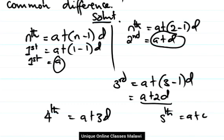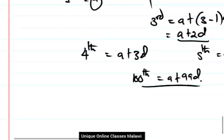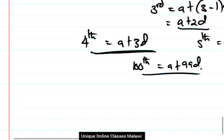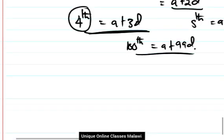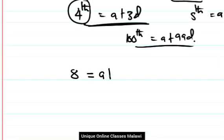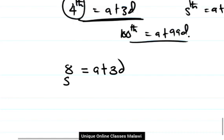So from our question here, we have fourth term, which will be a plus 3d, as this one. So we have fourth term a plus 3d, whereas the tenth term equals a plus 9d. The fourth term from the question was given as 8, so we have 8 equals a plus 3d. And the tenth term was given as 50, so 50 equals a plus 9d.